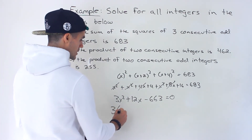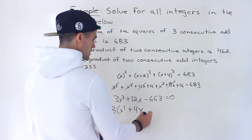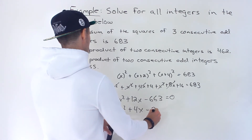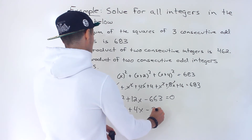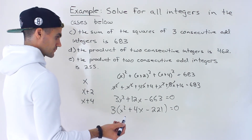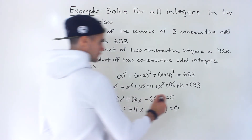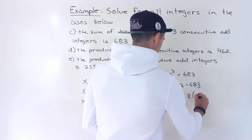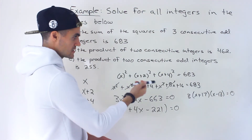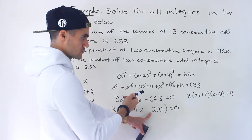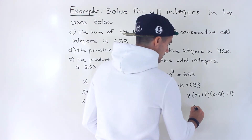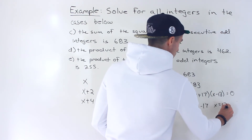Factoring out 3 gives x squared plus 4x minus 221 equals zero. This bracket factors into (x plus 17)(x minus 13) equals zero, because 17 times negative 13 gives negative 221, and 17x minus 13x gives positive 4x. So x equals negative 17 or x equals positive 13.